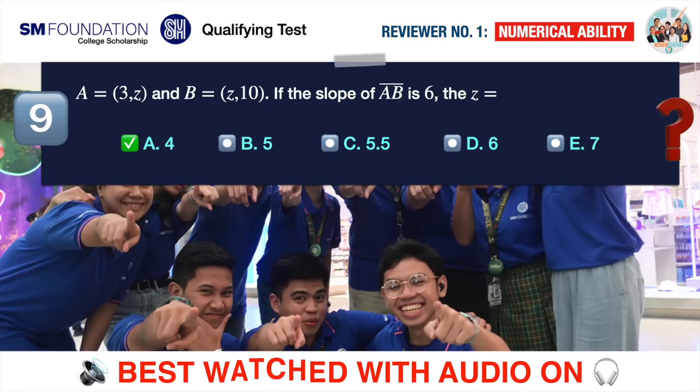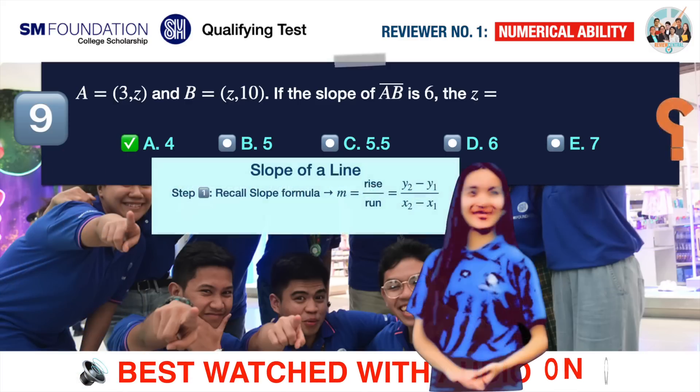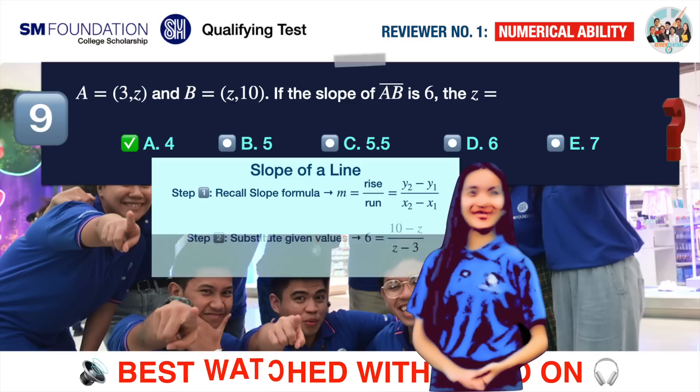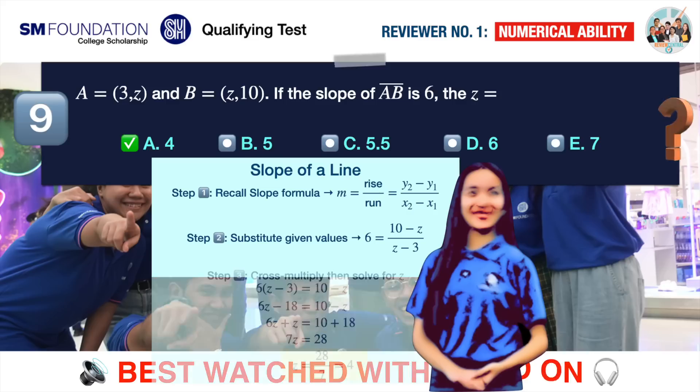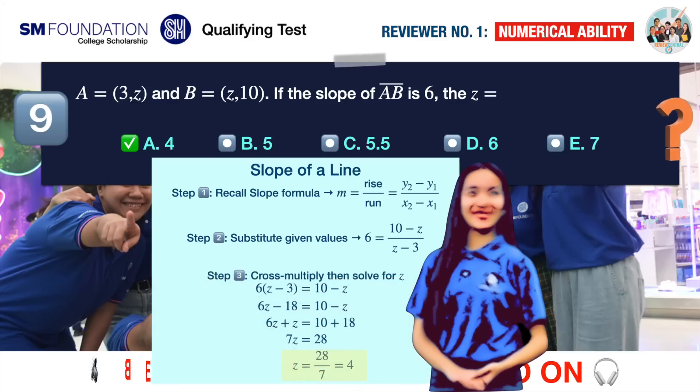The correct answer is A 4. Recall your slope formula given 2 points of a line. The slope, M, equals rise over run, or Y_2 minus Y_1 over X_2 minus X_1. Substituting the values of the slope M, and Y_1, Y_2, X_1, and X_2 from the given coordinates of A and B, we should arrive at the equation. 6, which is the slope, equals 10 minus Z over Z minus 3. After cross-multiplying, we should be able to quickly solve for the value of Z, which is 4.